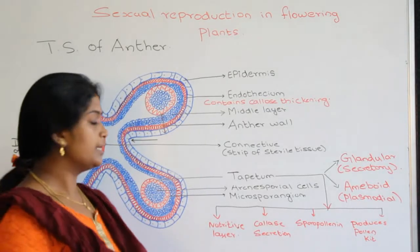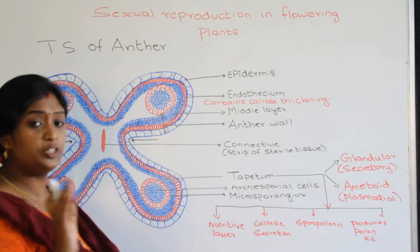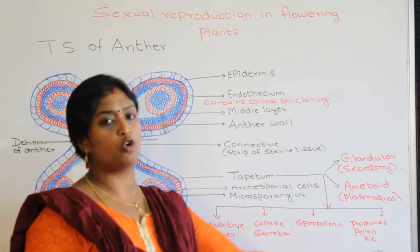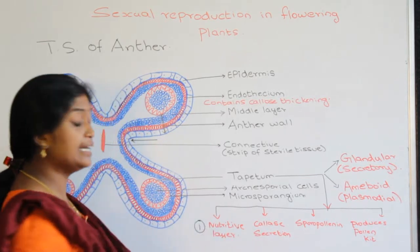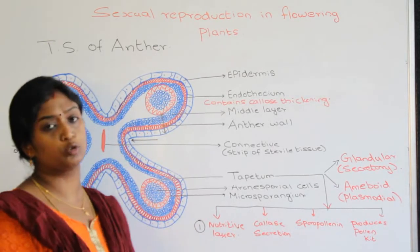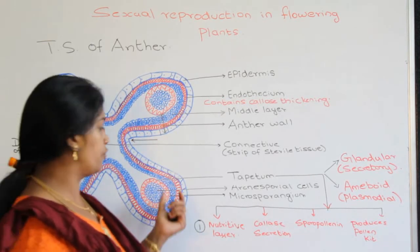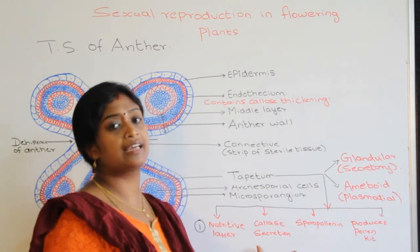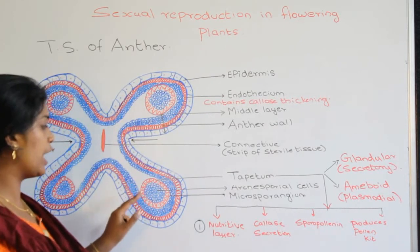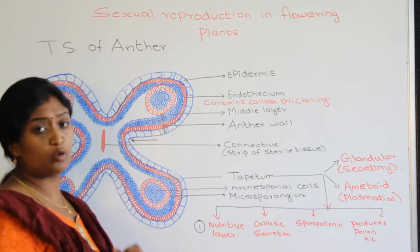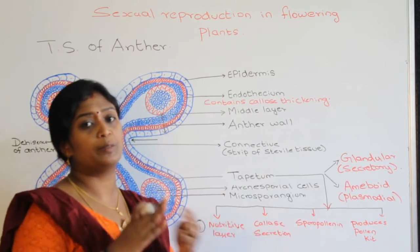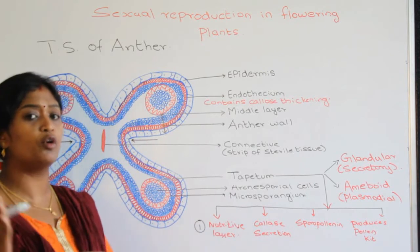Let's see the functions of the tapetum. The tapetum consists of pyramidal cells, each with dense cytoplasm and being multinucleated. The first important function is that it acts as a nutritive layer, playing a very important role in nourishing and developing the microspore. The second important function is that it secretes the enzyme callase. The endothecium has callose thickening, and similarly callose is present in the microspore, keeping together the tetrad pollen grains. The callase enzyme dissolves the callose to separate the tetrad pollen grains into four individual pollen grains.